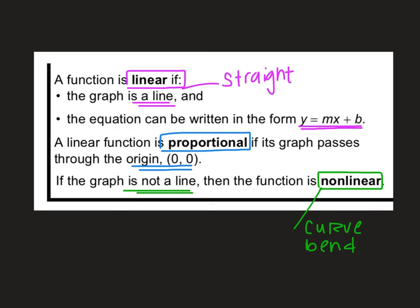Again, I just want to review this for you. A function is linear if it makes a straight line and the equation can be written in y equals mx plus b form. A linear function is proportional if it passes through (0, 0). And that's the only criteria for that one. So I want to make sure that we hit that again. It's important. And then the last thing, if the graph is not a line, if it doesn't make a straight line, then you would just identify it as non-linear. If it makes a curve or a bend, non-linear.